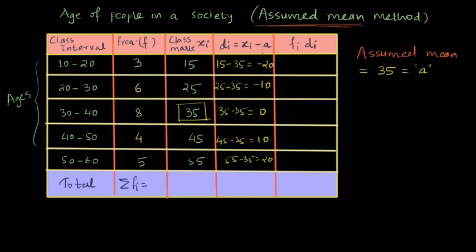Now we are interested in finding fᵢ dᵢ. That means the multiplication of the frequency and the respective deviations. So for the first row, we get minus 20 times 3, which is minus 60. And we can complete rest of the rows as follows. We get minus 10 times 6, which is minus 60 again, then zero times 8, which is zero, and 10 times 4, which is 40 and then 20 times 5, which is 100.